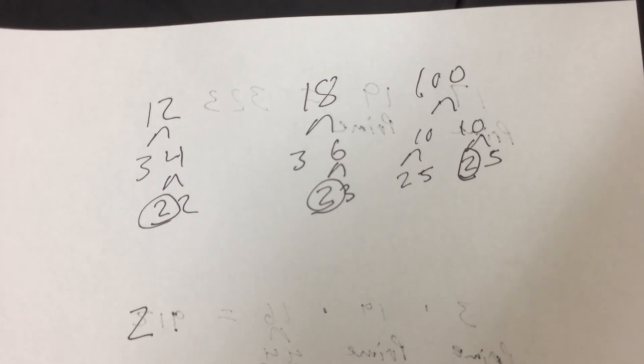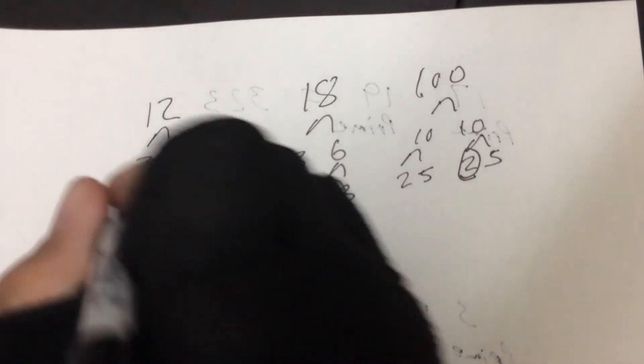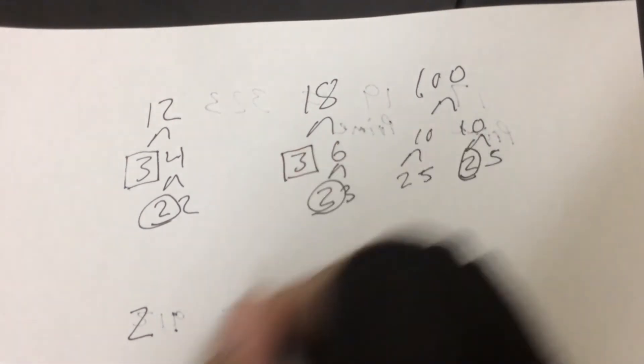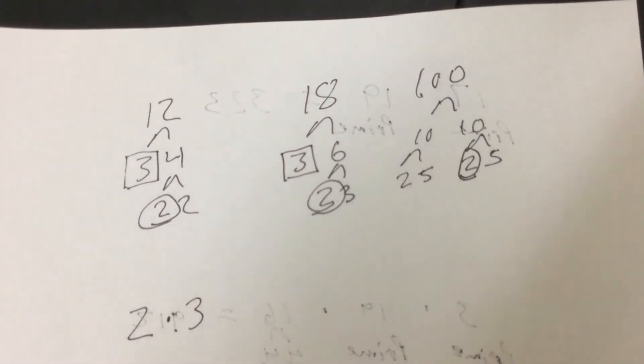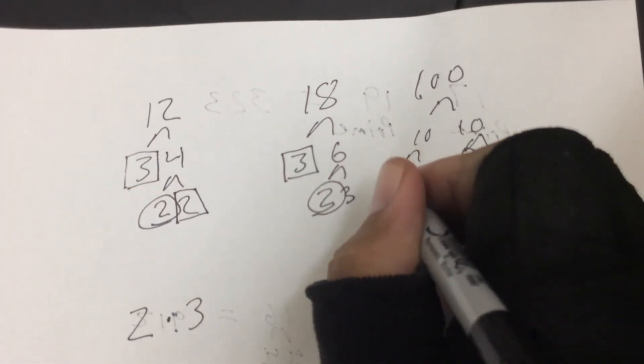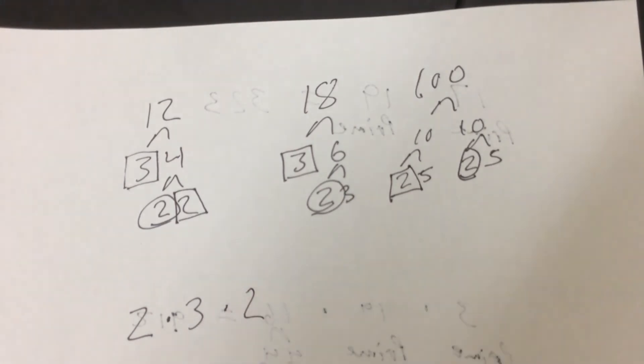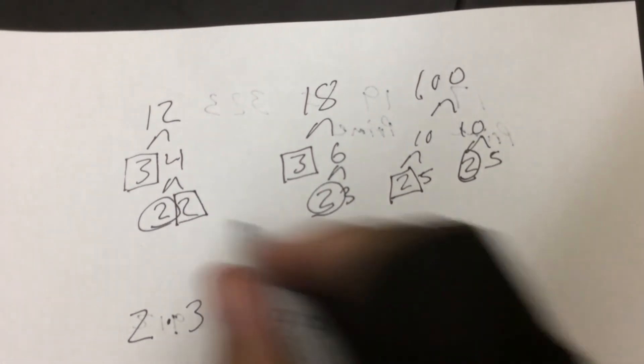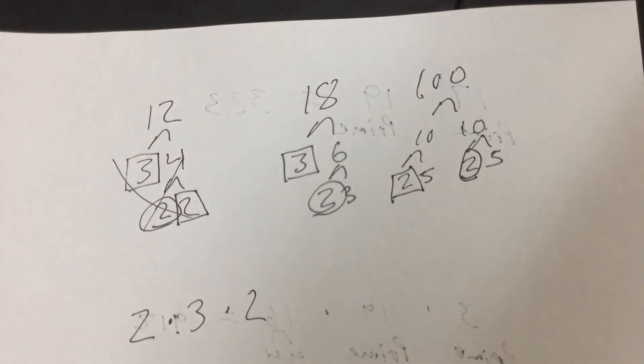So from there, we're going to look at what do two of them have in common. Well, this one has a 3. This one here has a 3. So we can multiply by 3. This one here has a 2. This one here has a 2. So we can multiply by 2. Again, 12, we've used them all. So we're going to cross it out. There's no more to look at there.